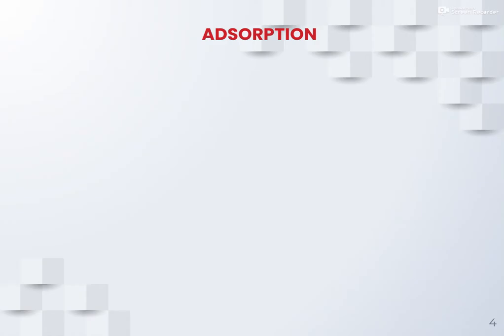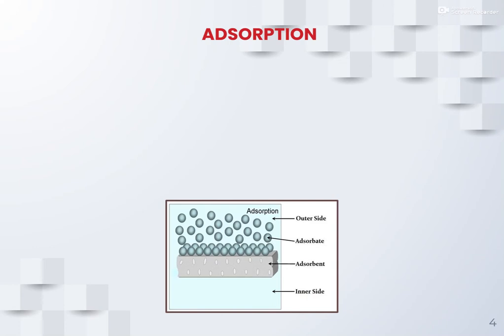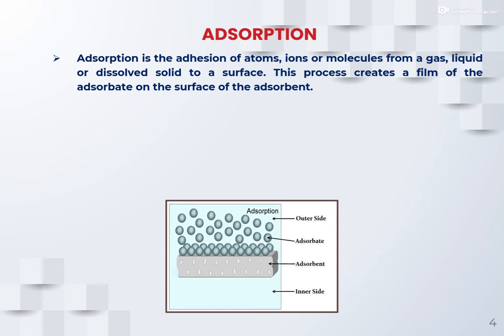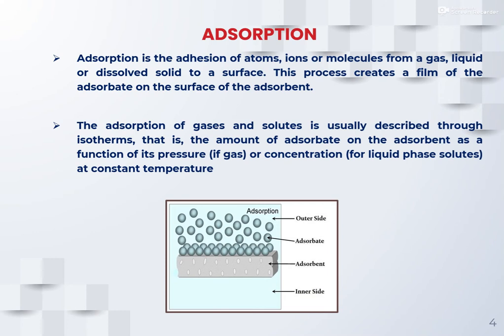Adsorption is the adhesion of atoms, ions, or molecules from a gas, liquid, or dissolved solid to a surface. This process creates a film of adsorbate on the surface of the adsorbent, and this is known as the process of adsorption. The adsorption of gases and solutes is usually described through isotherms — the amount of adsorbate on the adsorbent as a function of pressure or concentration at constant temperature.